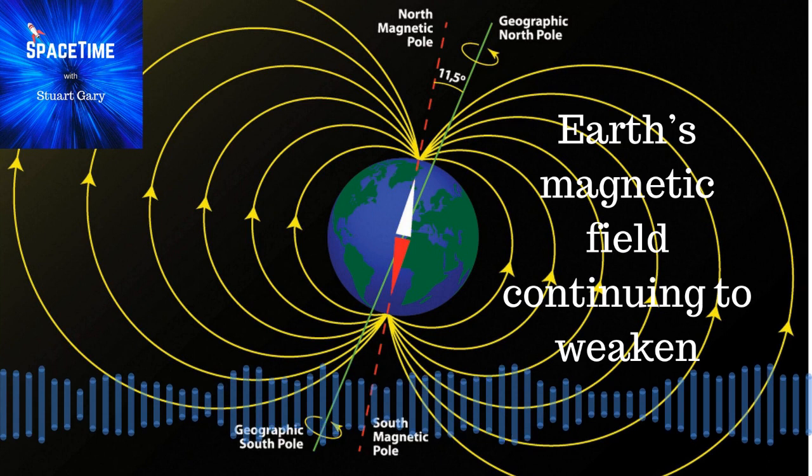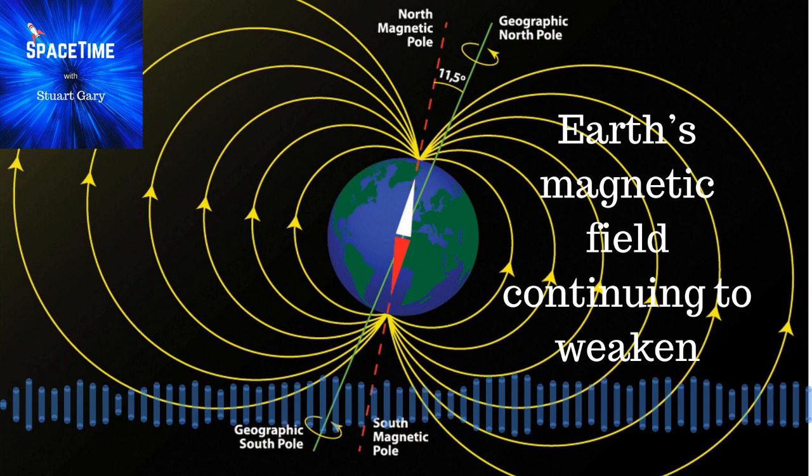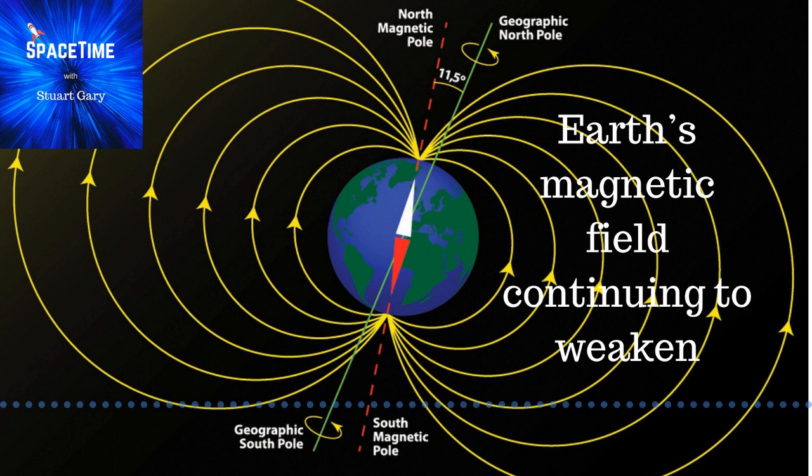Earth's magnetic field is often visualised as a powerful dipolar bar magnet at the centre of the planet, tilted at around 11 degrees to the axis of rotation. However, the growth of the South Atlantic anomaly suggests that the processes involved in generating the field are far more complex than that. Simple dipolar models are unable to account for the recent development of the second minimum.